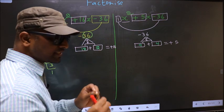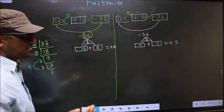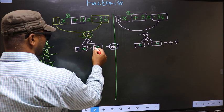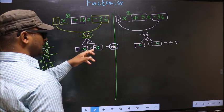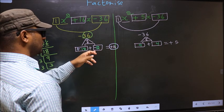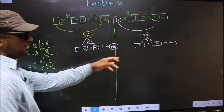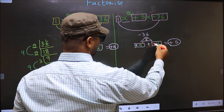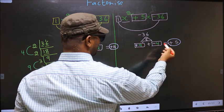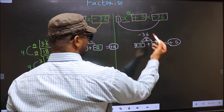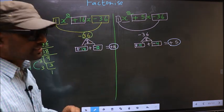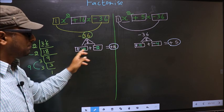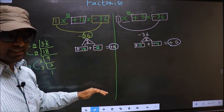Now we should adjust the signs. Over here we have +16, so we put +18 and -2: (+18) + (-2) = +16 and (+18) × (-2) = -36. For the second expression we need +5, so we put +9 and -4: (+9) + (-4) = +5 and (+9) × (-4) = -36. We have adjusted the signs in both. The difference is only in selecting the numbers; the rest is the same.